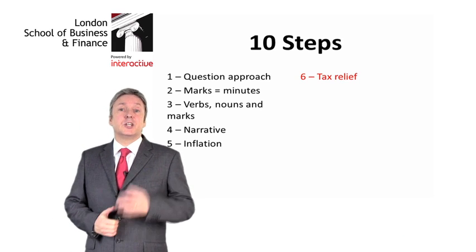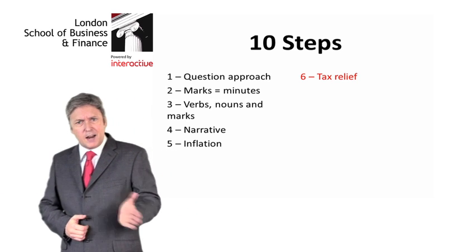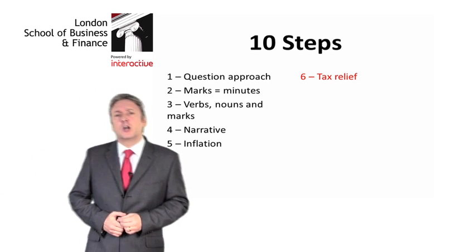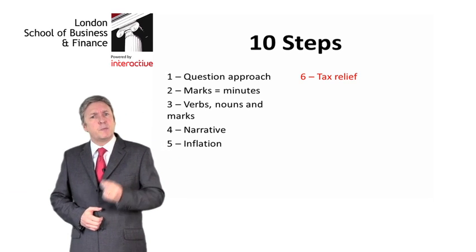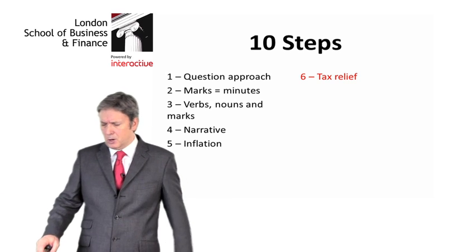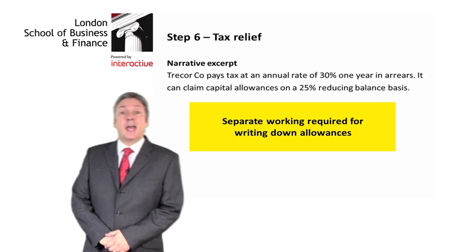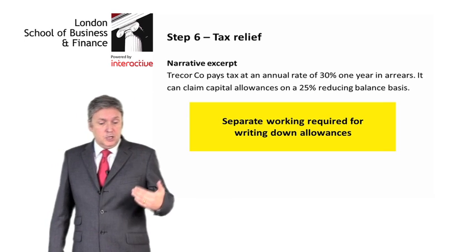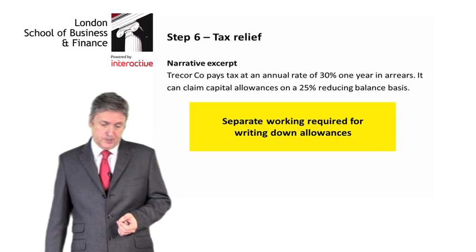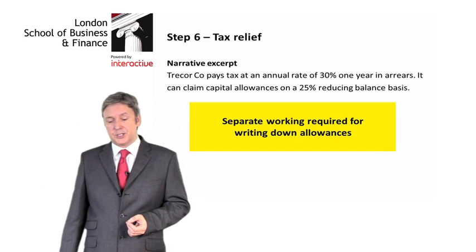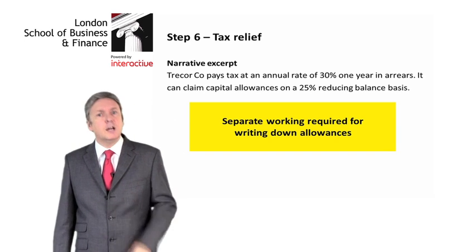What we now want to look at is the tax relief. The example in this question requires us to remember how to deal with writing down allowances on a reduced balance basis — the most common method. Here's the narrative excerpt from the question: Tricorco pays tax at an annual rate of 30%, one year in arrears. It can claim capital allowances on a 25% reducing balance basis. This is seen many times.